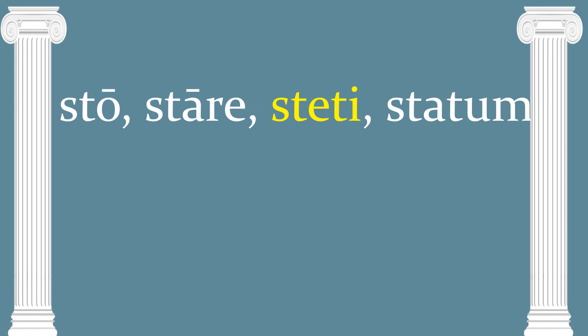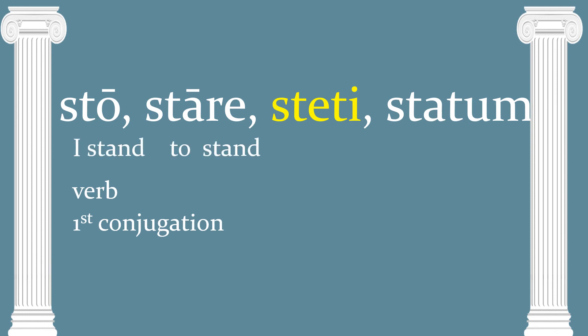Next we have sto, stare, steti, statum. Again the third principal part is irregular — instead of stawi, it's steti. This is a first conjugation verb. Sto means I stand; stare means to stand. And we get so many words: stop, stand, still, station, status — which is basically your standing, so if someone asks your credit status they want to know your credit standing — statue, and lots more.